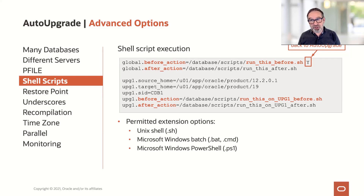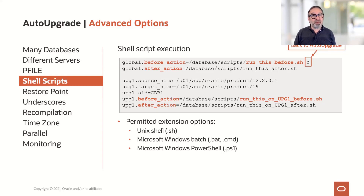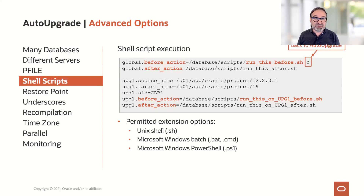We also passed on this option — you see it here with the red-marked Y. This means if the return code of the shell script executable is positive, yes, then we will go on. If that fails, auto-upgrade will stop. This is to make sure that if, say, stopping my application server stack fails, the upgrade won't proceed. If the return code is false, the database won't be upgraded. You have permitted executions for shell scripts on Unix. On Windows, you have more variety — you can use batch, command, or PowerShell.